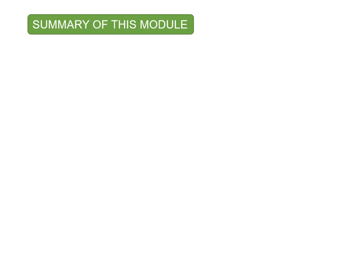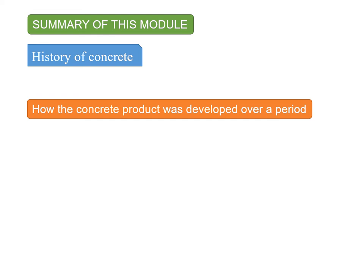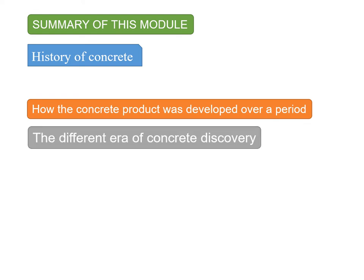In summary, this module discussed the history of concrete — how concrete evolved and developed from ancient times through the Roman era, the middle age, and the industrial era. Famous structures of the ancient and Roman ages, such as the Hoover Dam, the Panama Canal, and the Roman Pantheon, were highlighted, demonstrating the durability of unreinforced concrete structures. The development of concrete products over different eras was covered, and the different eras of concrete discovery were discussed.